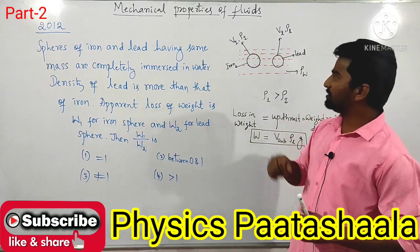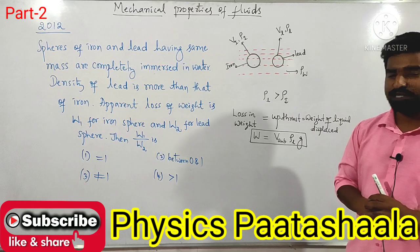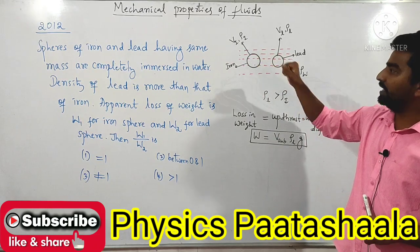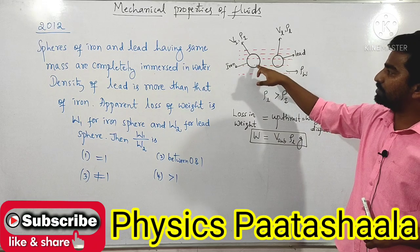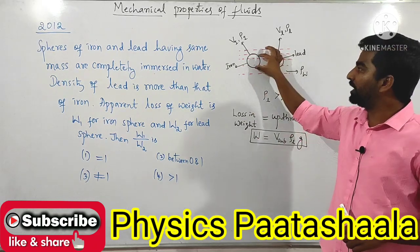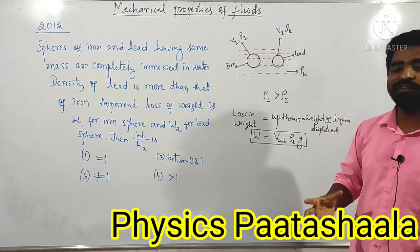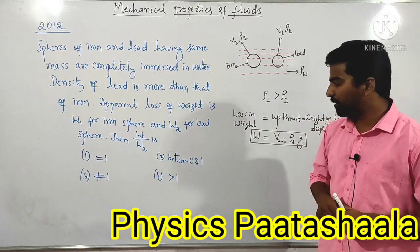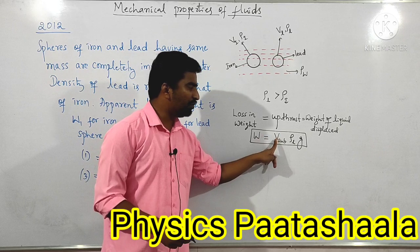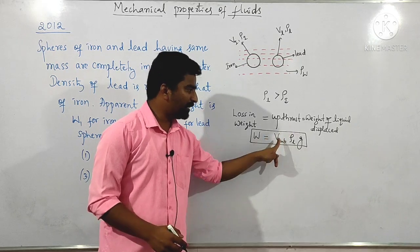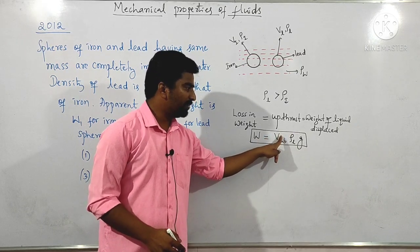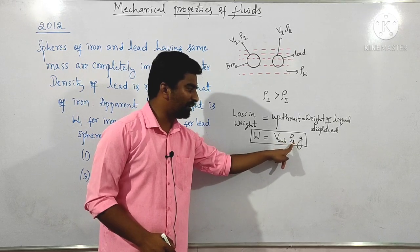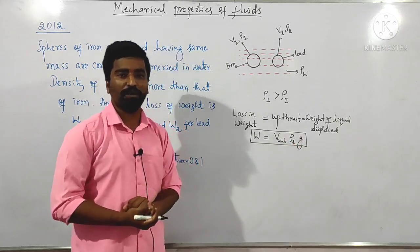This is also based on Archimedes' principle: when an object is placed in water or any liquid, there exists an upthrust, and that causes a weight loss. That weight loss can be calculated by the formula: loss of weight equals upthrust. Upthrust equals volume of the object submerged, multiplied by density of the liquid, multiplied by acceleration due to gravity.